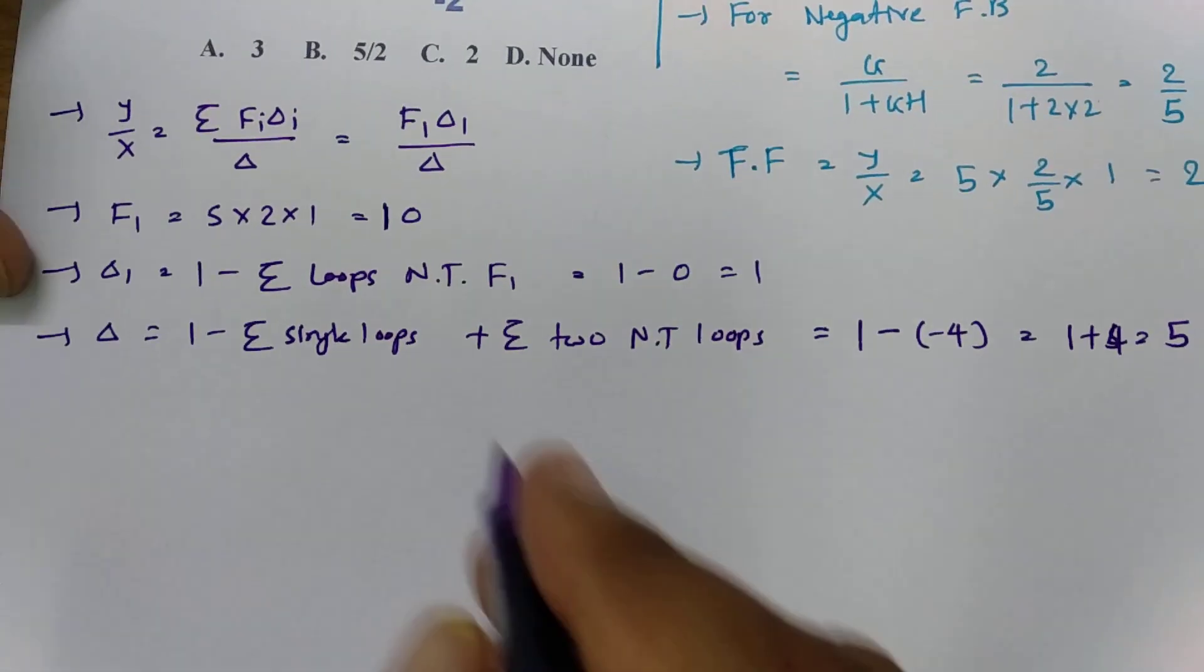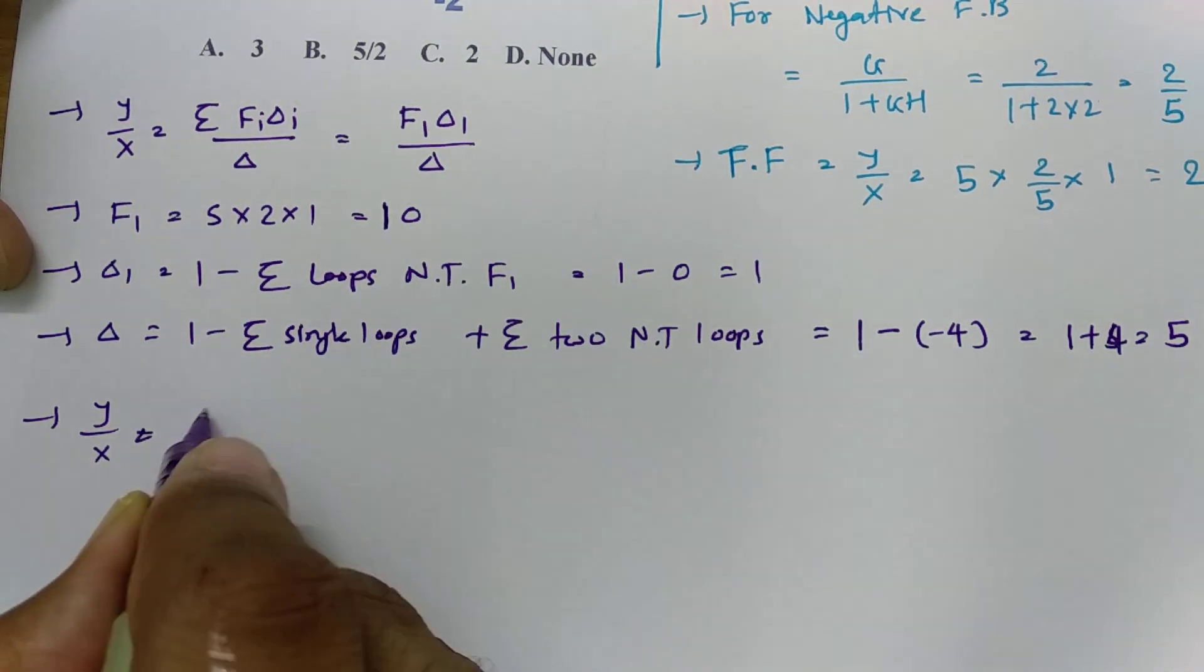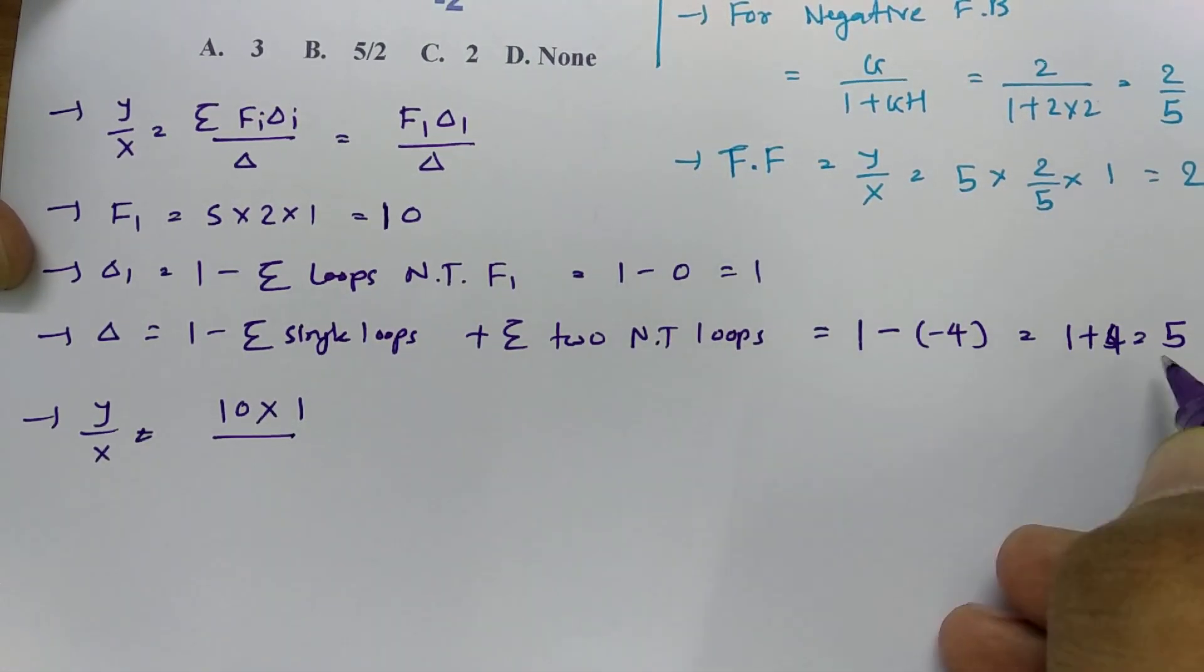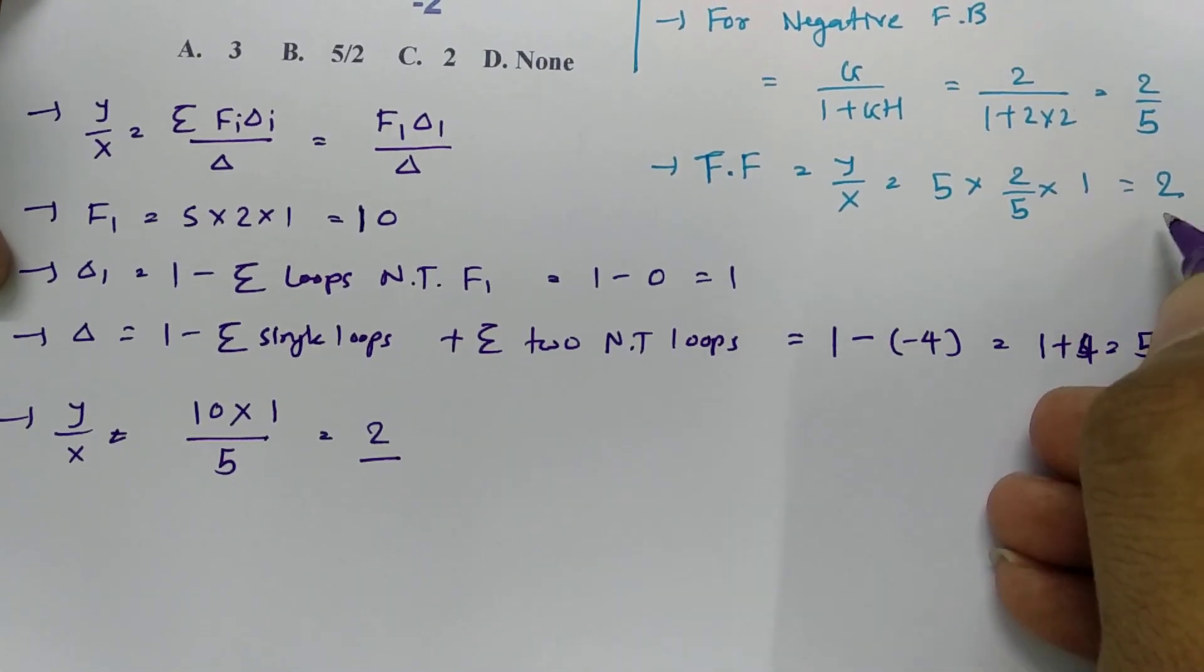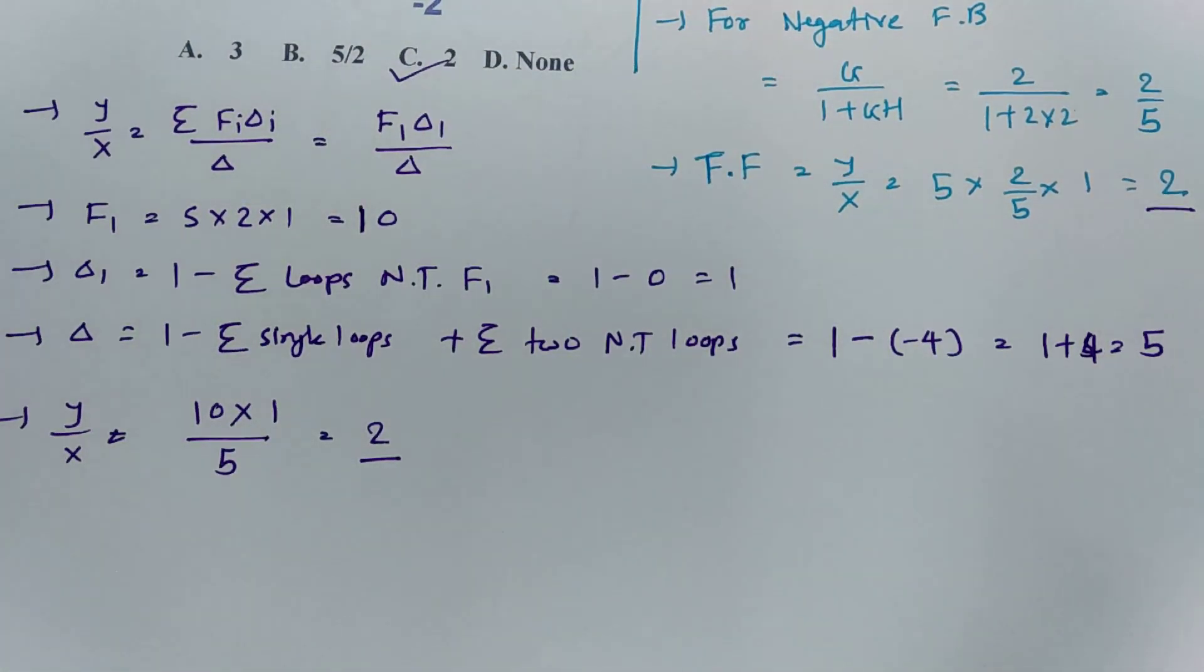So now we have all those values, we can place that in this formula. So y by x, that is F1 is 10, delta 1 is 1 divided by delta that is 5. So it is 2. So one can see by both of the ways our answer is 2. So this is the correct option C.